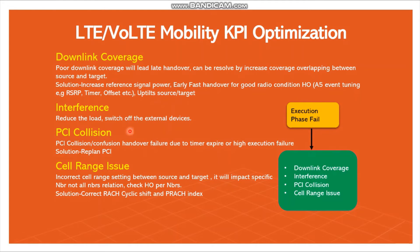For interference cases, we first have to identify whether it is internal or external interference. Internal interference means there are high users, so we can reduce the load for that particular cell. If it is external interference, we have to switch off the external device such as a jammer or other devices not defined in the network. For PCI collision — if any LTE sites have the same PCI, PCI collision occurs and causes handover failure. We have to re-plan the PCI for such cases.